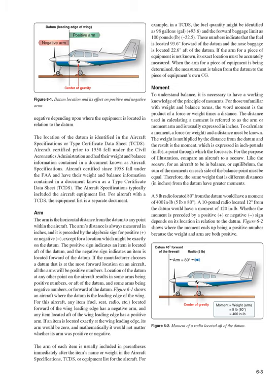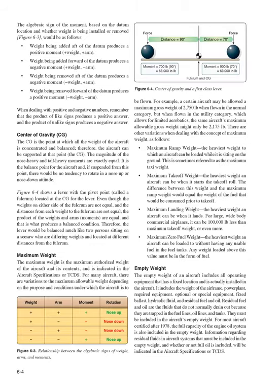Figure 6-2 shows where the moment is a positive number because both the weight and arm are positive. The algebraic sign of the moment (Figure 6-3) would be as follows: weight added aft of the datum produces a positive moment (+weight × +arm); weight added forward of the datum produces a negative moment (+weight × −arm); weight removed aft produces a negative moment (−weight × +arm); weight removed forward produces a positive moment (−weight × −arm).